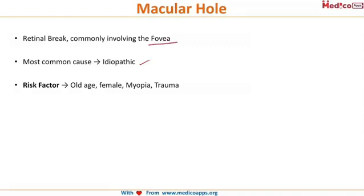There are a few risk factors to remember: old age, female gender, high myopia, and a history of trauma. These four factors will predispose the eye to a macular hole.